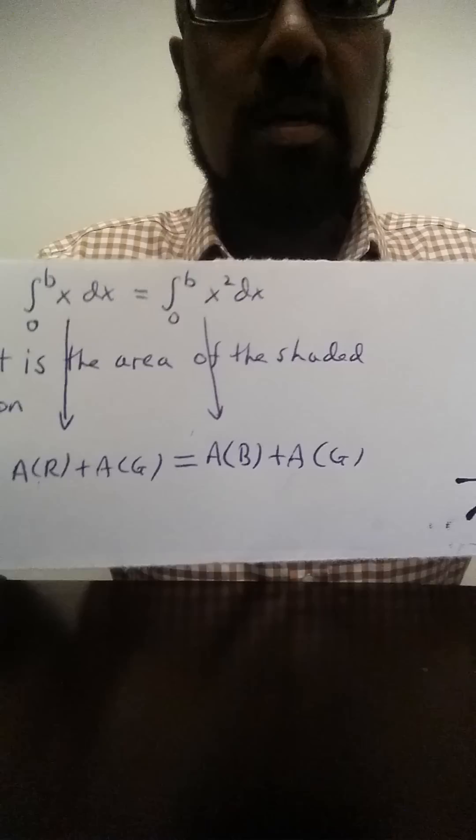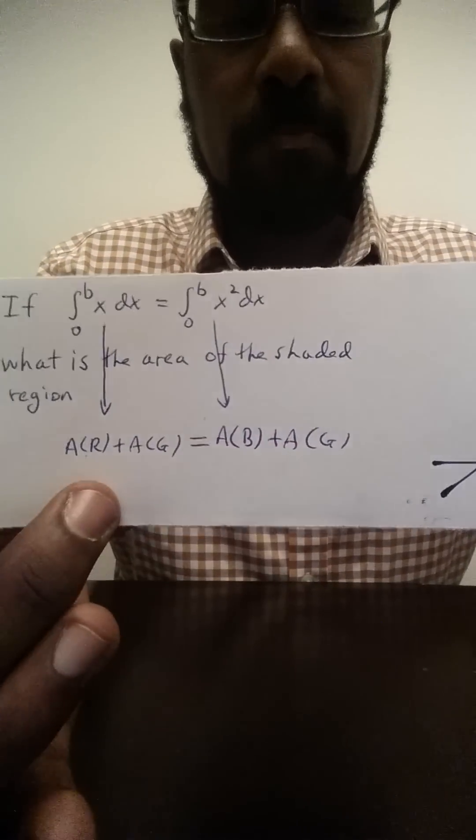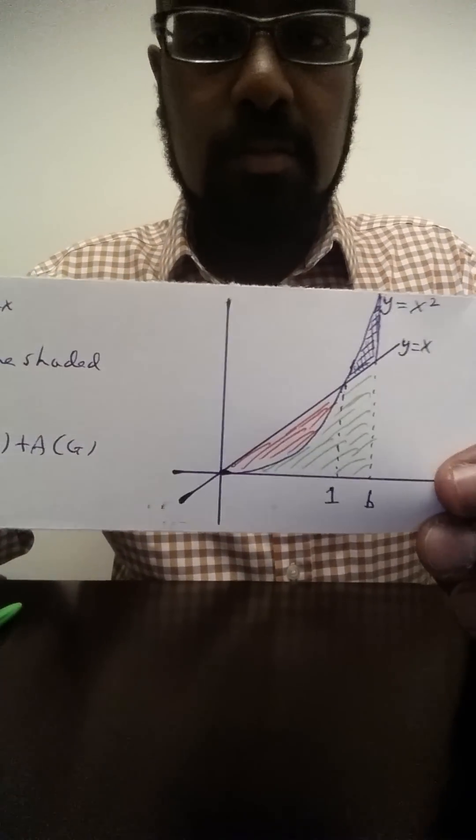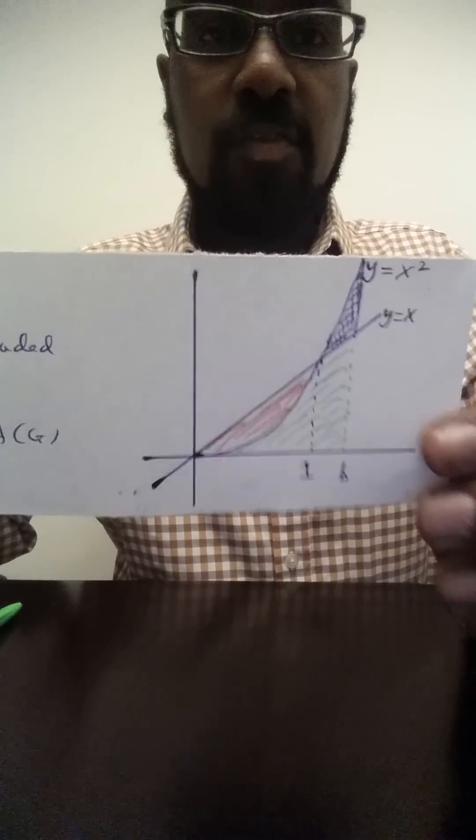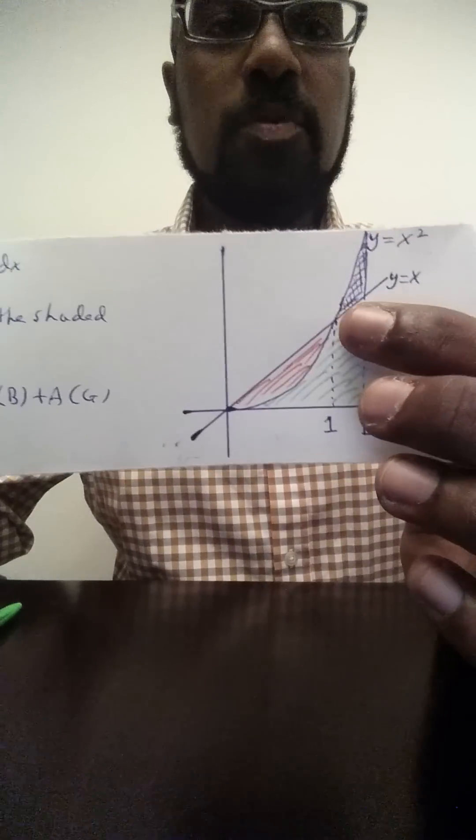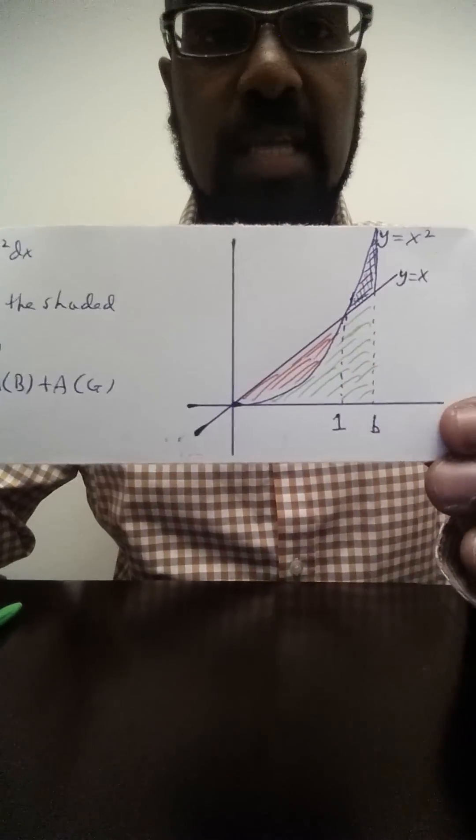And so the statement then is that these two quantities are equal, and so in fact the area of the blue region and the area of the red region are the same. So if you want to compute the area of the blue region, we'll compute the area of the red region instead.